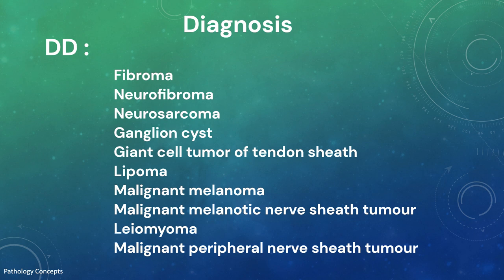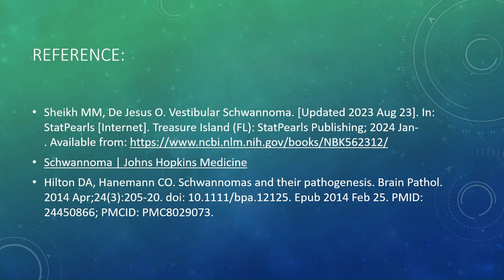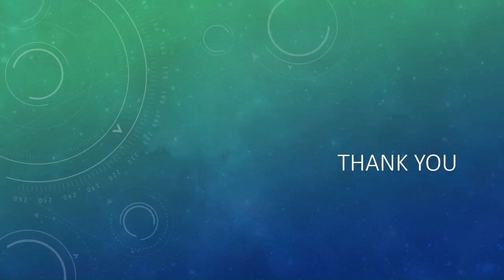Further differential diagnoses include neurosarcoma, ganglion cyst, giant cell tumor of tendon sheath, lipoma, malignant melanoma, malignant melanotic nerve sheath tumor, leiomyoma, and malignant peripheral nerve sheath tumor. Management usually involves surgical resection. This concludes the overview of schwannoma. Thank you and see you in the next video.